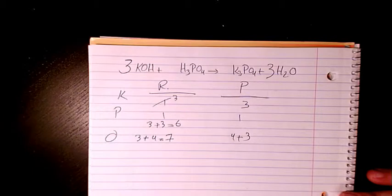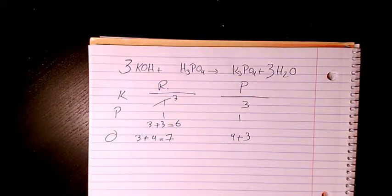moles of KOH reacts with one mole of phosphoric acid gives K3PO4 plus three moles of water. So that's how it's balanced. Please leave me a comment if you have any questions and I'll get back to you as soon as possible.